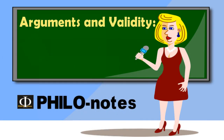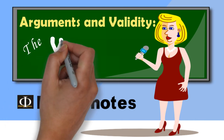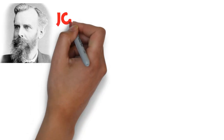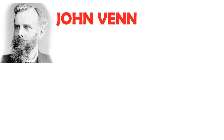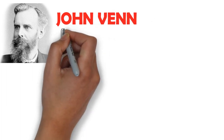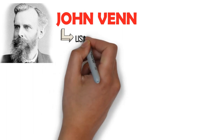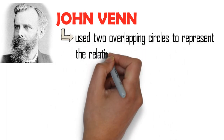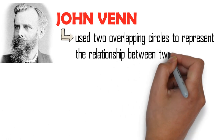Another method of symbolizing categorical propositions is the use of the Venn Diagram. John Venn, who introduced the method — thus the name Venn Diagram — used two overlapping circles to represent the relationship between two classes.